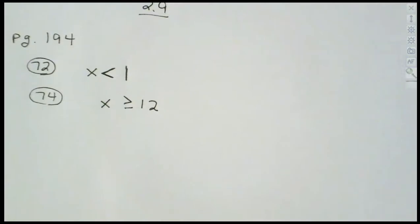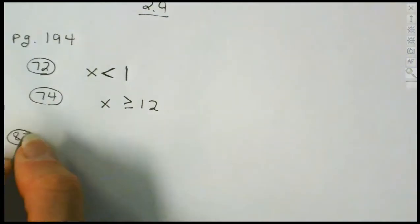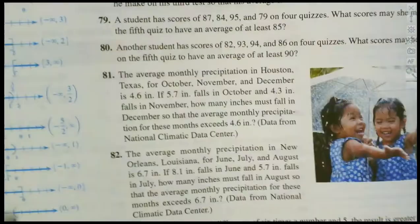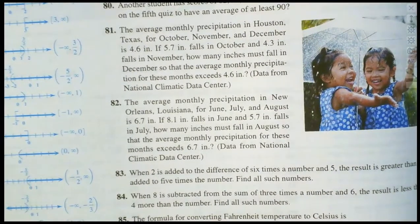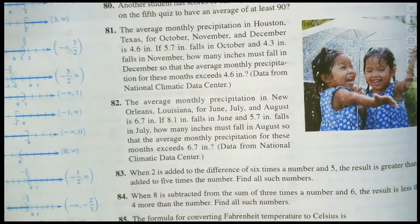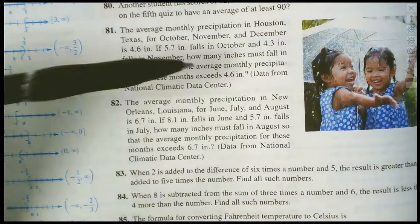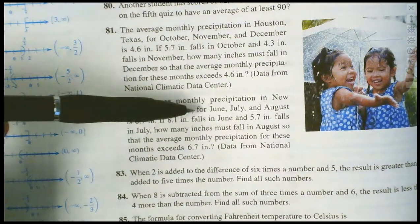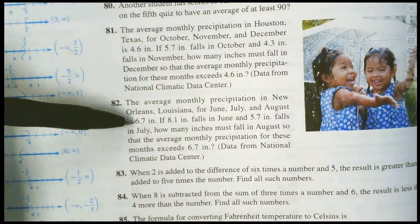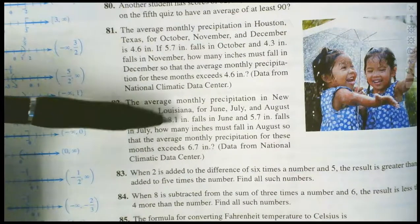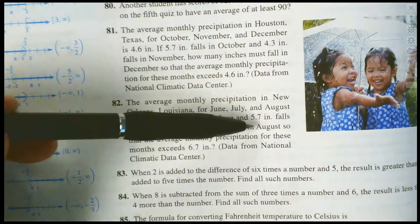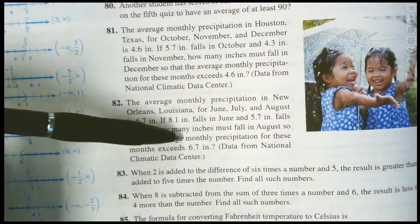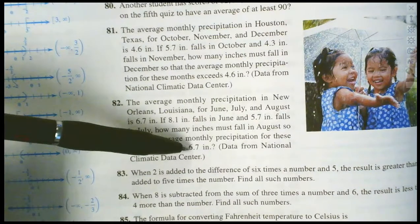Now let's look at question 82, which involves an average. The average monthly precipitation in New Orleans, Louisiana for June, July, and August is 6.7 inches. If 8.1 inches fall in June and 5.7 inches fall in July, how many inches need to fall in August so that the average monthly precipitation for those months exceeds 6.7 inches?